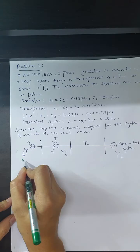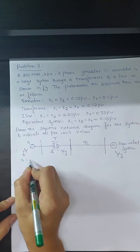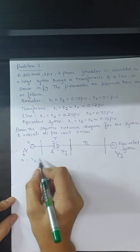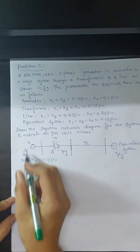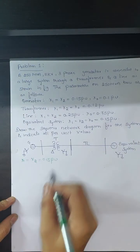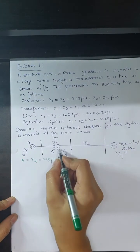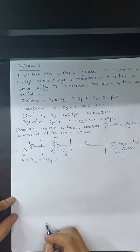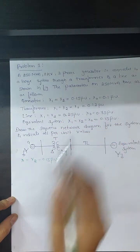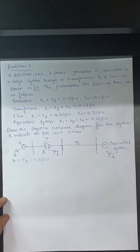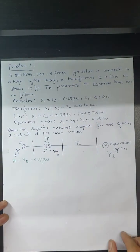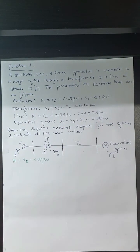For the generator: X1 = X2 = 0.15 per unit. For the transformer: X1 = X2 = 0.12 per unit. We can directly proceed to drawing the sequence network diagrams. The positive and negative sequence network drawings are similar to the examples done in Module 1.